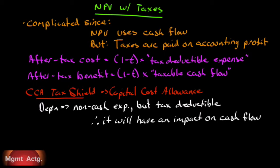Net present value with taxes is a little bit complicated since net present value uses cash flow, but taxes are paid on accounting profit. So when we look at our cash flows, that's not necessarily profit — we don't pay tax on that. And some things that are not included in cash flow, like depreciation, are deductible for tax purposes.